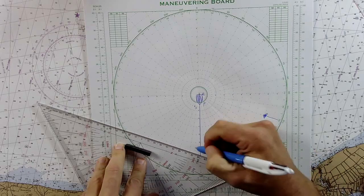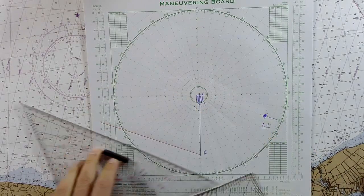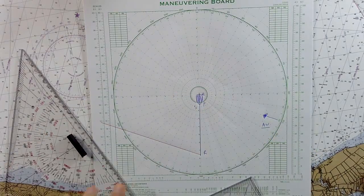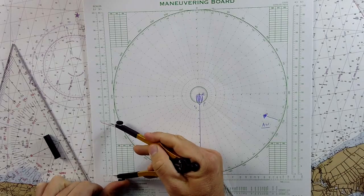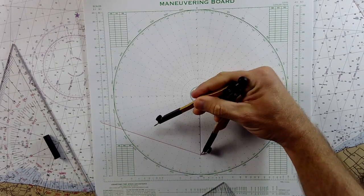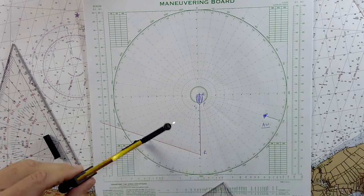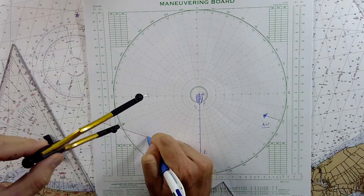So then if we draw that vector in the same direction and for a distance of 20 knots on a 3 to 1 scale, we end up with a new point. This point you can label W.